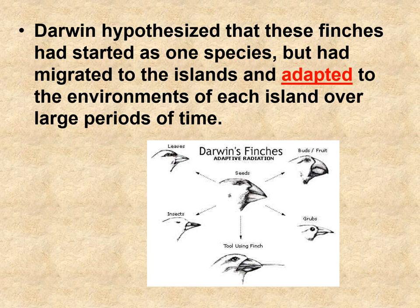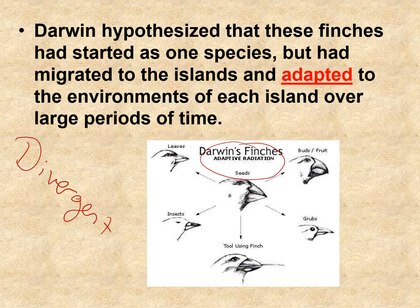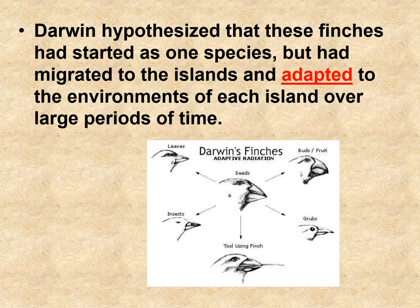This is the idea we call adaptive radiation — when you radiate, you spread out, and it deals with adaptations. This is also what we call divergent evolution. To diverge means to split. So we have a common ancestor, but over time, due to mutations, we end up with creatures different enough that we have to give them different species names.